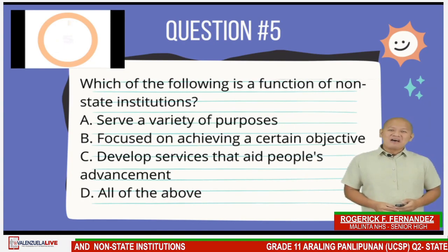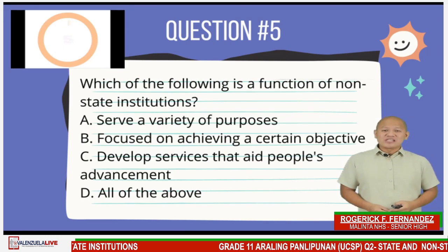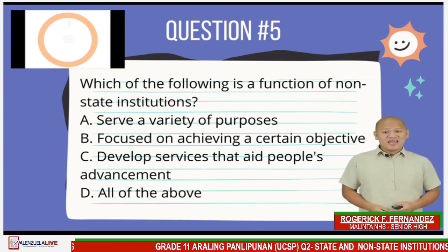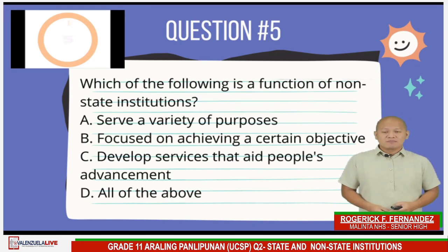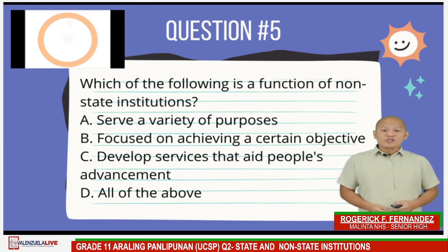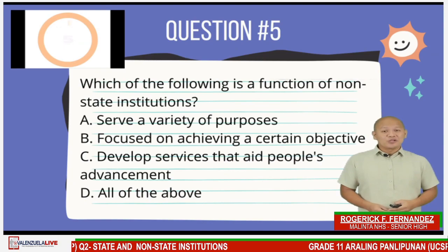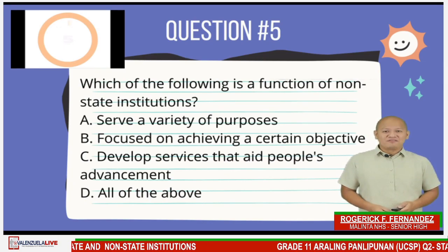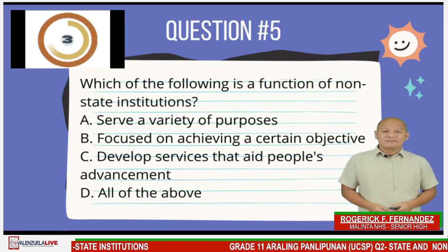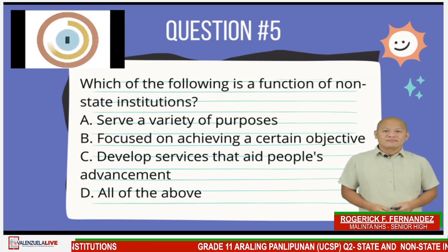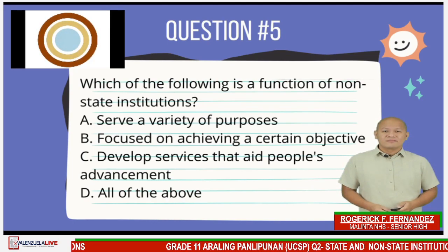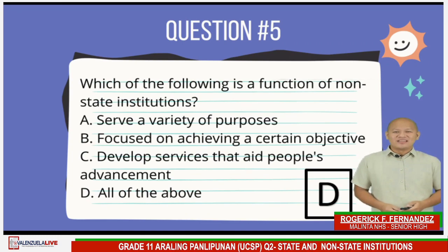Lastly, we have question number five: Which of the following is a function of non-state institutions? Letter A, Serve a variety of purposes. Letter B, Focus on Achieving a Certain Objective. Letter C, Develops Services that Aid People's Advancement. Letter D, All of the Above. The answer is Letter D.